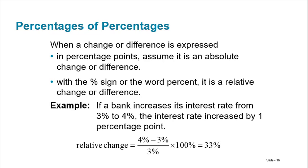When a change or difference is expressed in percentage points, assume it's an absolute change. With the percentage sign or the word 'percent,' it is a relative change. So if a bank increases its interest rate from 3% to 4%, the interest rate increased by one percentage point. The relative change would be 1 over 3, meaning it went up by 33%, because it went up one-third of what it used to be.